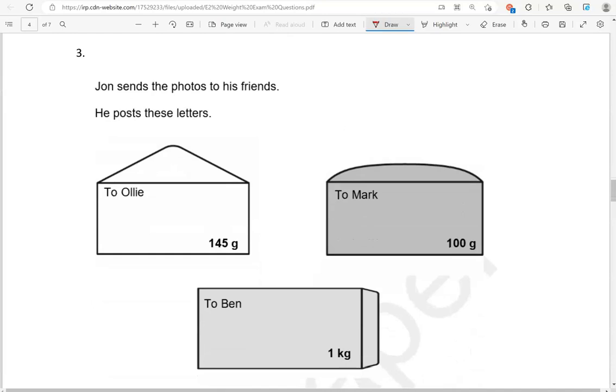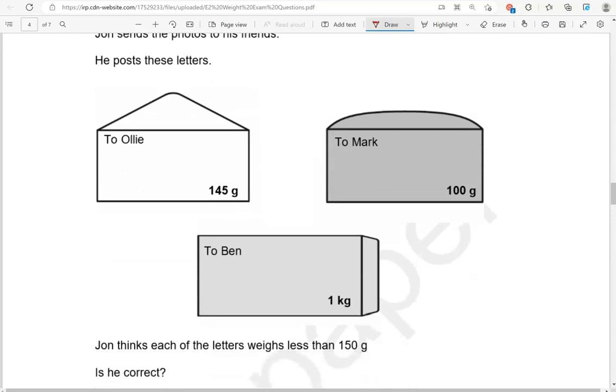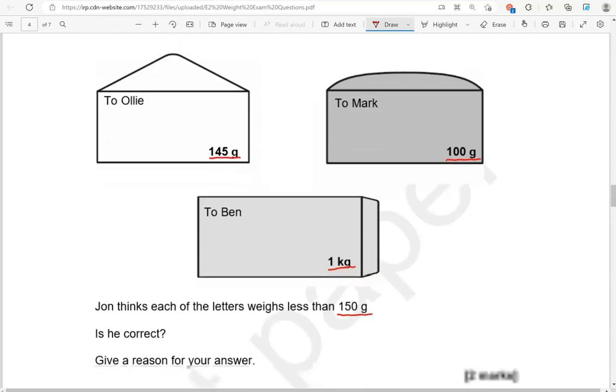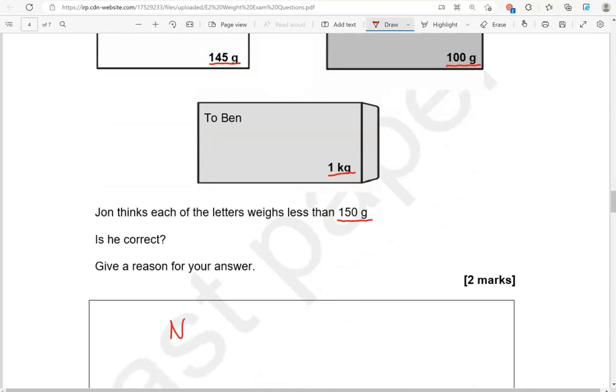John sends the photos to his friends. He posts these letters. John thinks each of the letters weighs less than 150 grams. Is he correct? The first one weighs 145 grams, which is less than 150. So that is correct about that one. Then we've got this other letter to Mark, 100 grams, which is less than 150. Then to Ben, that's one kilogram. So in one kilogram, there are 1,000 grams, which is much greater than 150 grams. So he's not correct. He says no, the letter to Ben weighs more.